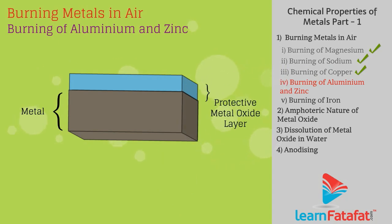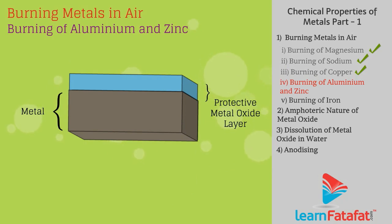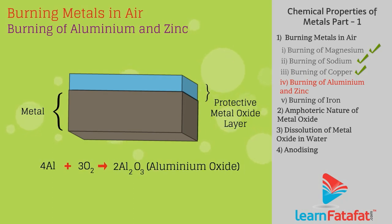Metals such as aluminum and zinc react with oxygen and form a protective metal oxide layer that prevents further oxidation, i.e., 4Al + 3O2 gives 2Al2O3 (aluminum oxide).